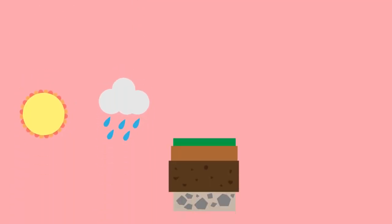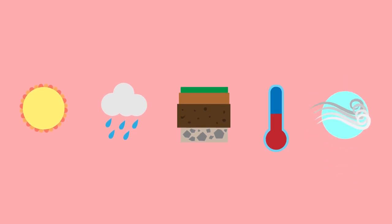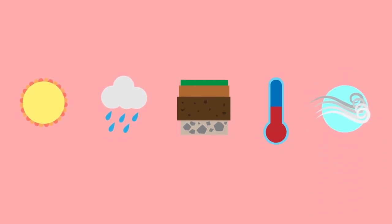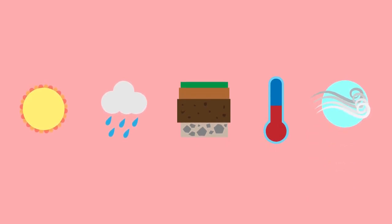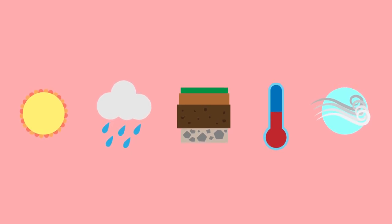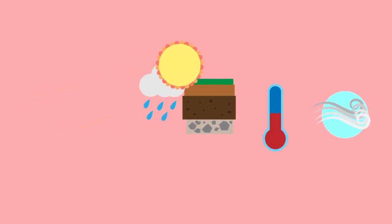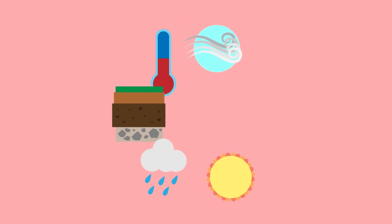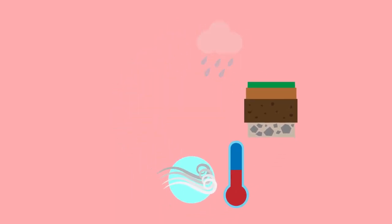Sunlight, precipitation, soil composition, temperature, and air currents are all examples of abiotic components that can be found within an ecosystem. While each of these components is important by itself, how they interact with each other also greatly influences their environment.